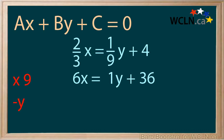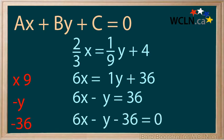Now subtract y from both sides of the equation to get it on the left-hand side. It is not necessary to put in 1y because 1 is understood. Now subtract 36 from both sides. 6x - y - 36 = 0 is in general form.